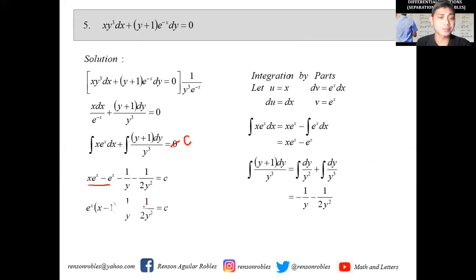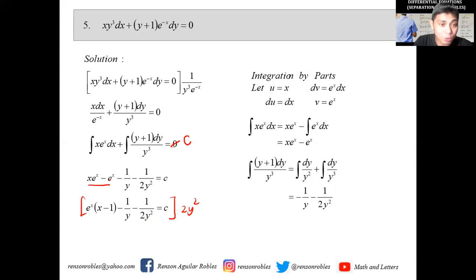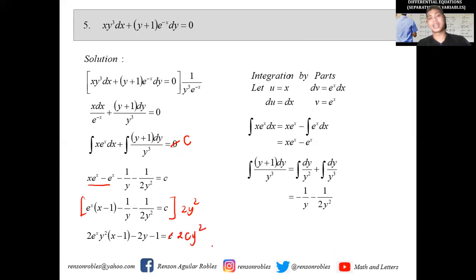Factoring out e^x and multiplying everything by 2y² to clear denominators, we eventually get 2y²·e^x·(x-1) - 2y - 1 = 2Cy². This is the general solution.